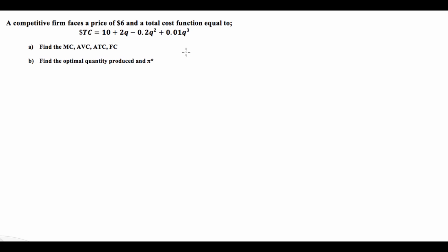I've been given this microeconomics question where it tells us that a competitive firm faces a price of $6 and a total cost function equal to 10 plus 2q minus 2q squared plus 0.1q cubed. Q is going to be the quantity of goods. Part A asks us to find the marginal cost, the average variable cost, the average total cost, and the fixed cost.